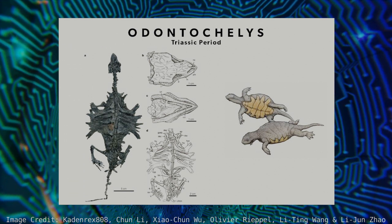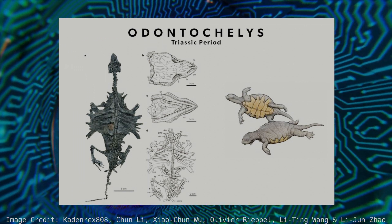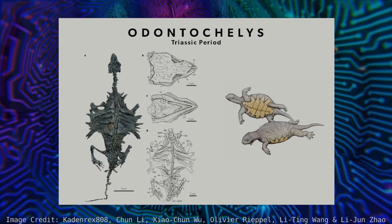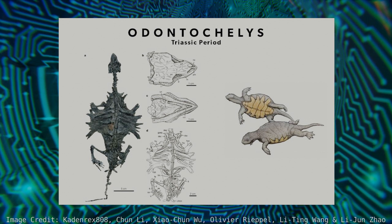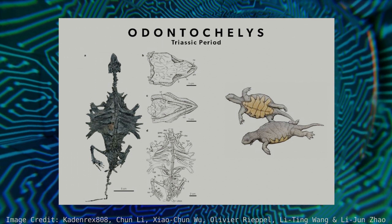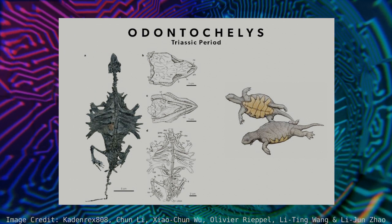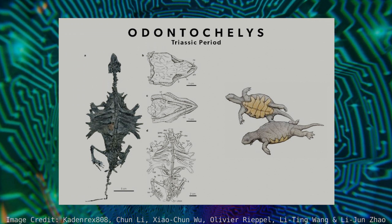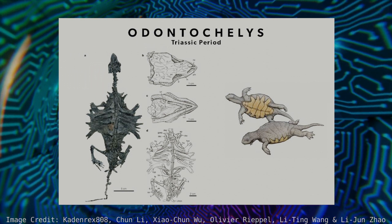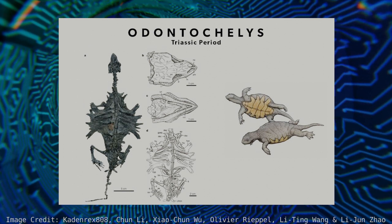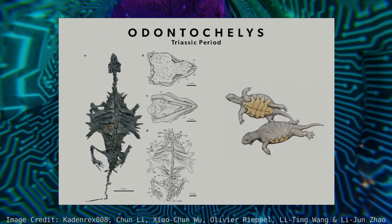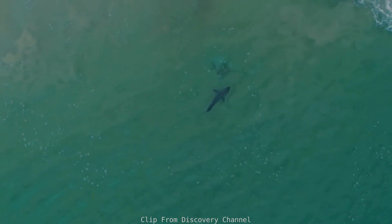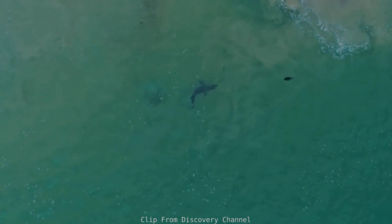Now we come to Odontochelys. Interestingly, Odontochelys only has a plastron — the bottom shell — and no carapace or upper shell, although it does have thick, broad ribs like Eunotosaurus and Pappochelys before it. It lived around 232 to 221.5 million years ago in what is now China during the Triassic period. Another interesting aspect is that it was at least semi-aquatic. It seems that the relationship between water and turtles goes back to nearly the beginning of the lineage. This aquatic setting gives us a hint at the pressures that went into evolving the plastron — it seems that Odontochelys was being attacked by would-be predators from underneath. Today both orcas and sharks are famous for attacking seals this way, and something similar was probably happening to Odontochelys.